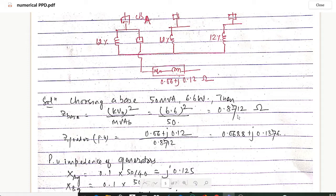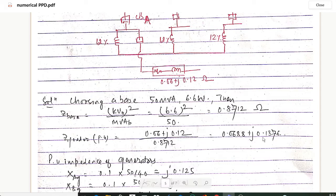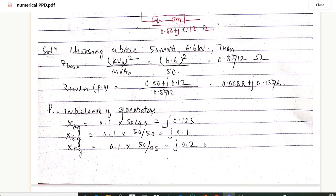The impedance of the feeder in per unit is calculated by dividing the feeder impedance by the base impedance. With feeder impedance of 0.06 + j0.12 ohm divided by 0.8712, we get Z_feeder = 0.0688 + j0.1376 per unit.